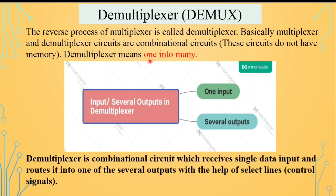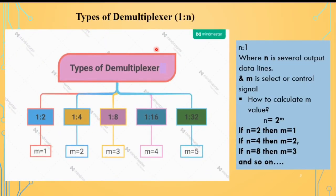Demultiplexer means one into many, and multiplexer means many into one. A demultiplexer has only one input and several outputs. It is a combinational circuit which receives a single data input and routes it into one of several outputs with the help of select lines, which are the controlling signals. Types of demultiplexer include 1 by 2 and 1 by 4.